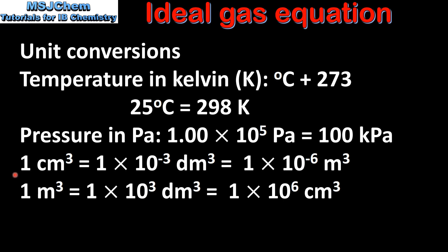And finally volume. 1 centimeter cubed is equal to 1 times 10 to the negative 3 decimeters cubed which is equal to 1 times 10 to the negative 6 meters cubed. And 1 meter cubed is equal to 1 times 10 to the 3 decimeters cubed which is equal to 1 times 10 to the 6 centimeters cubed.